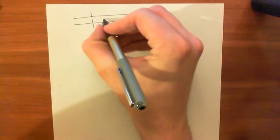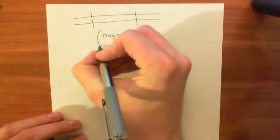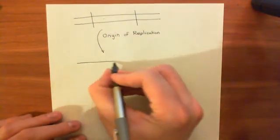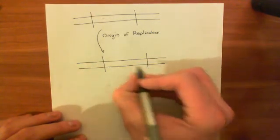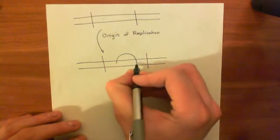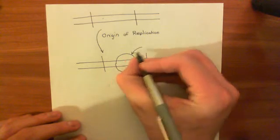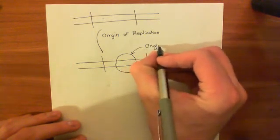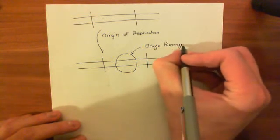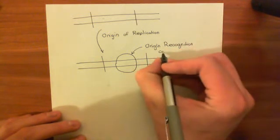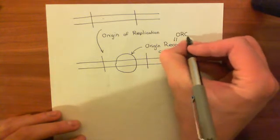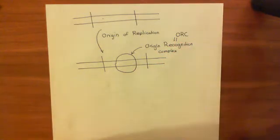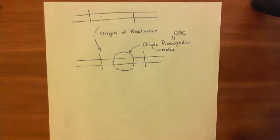Before you can actually get an origin of replication to fire, you need to assemble a huge amount of protein machinery on this origin of replication. You assemble part of it in the G1 phase, and the final bit in the S phase - once you've gone into S phase you can actually fire it. But you assemble the beginning bits in G1 phase, and that's what I mean when I say we're getting ready to replicate the DNA.